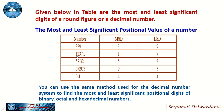Next, 1237.0 — here, 1 is the MSD and 7 is the LSD. Now, 58.32 — 5 is the MSD and 2 is the LSD. Next, 0.0975 — MSD is 9 and LSD is 5.